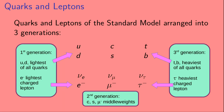In order to answer this question, let's first look at the quarks and leptons of the standard model. The quarks and leptons of the standard model are arranged into three generations. The quarks are in the two top lines, and the leptons are in the two bottom lines. The first generation consists of the up quark and the down quark, and the electron and its partner neutrino. The second generation consists of the charm quark and the strange quark, the muon and its partner muon neutrino. The third generation consists of the top quark, the bottom quark, the tau lepton, and the tau's partner neutrino, the tau neutrino.